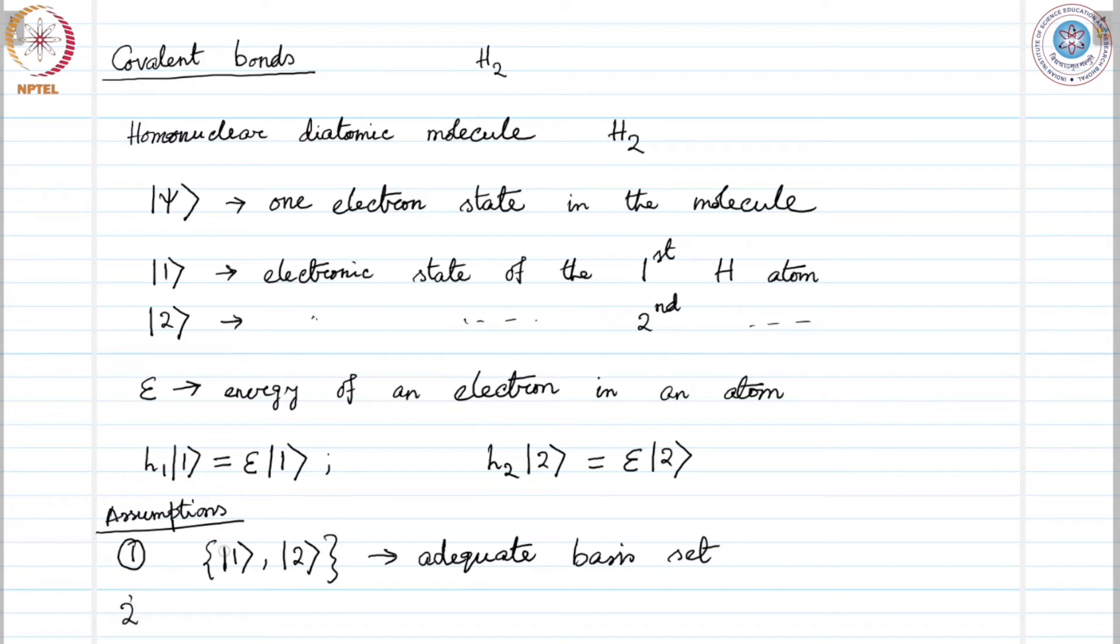The second assumption is that we assume one and two to be orthonormal. That means if we have a state i and j, the inner product between them is Kronecker delta ij. This is the orthonormality condition. For one and two, we assume orthonormality.